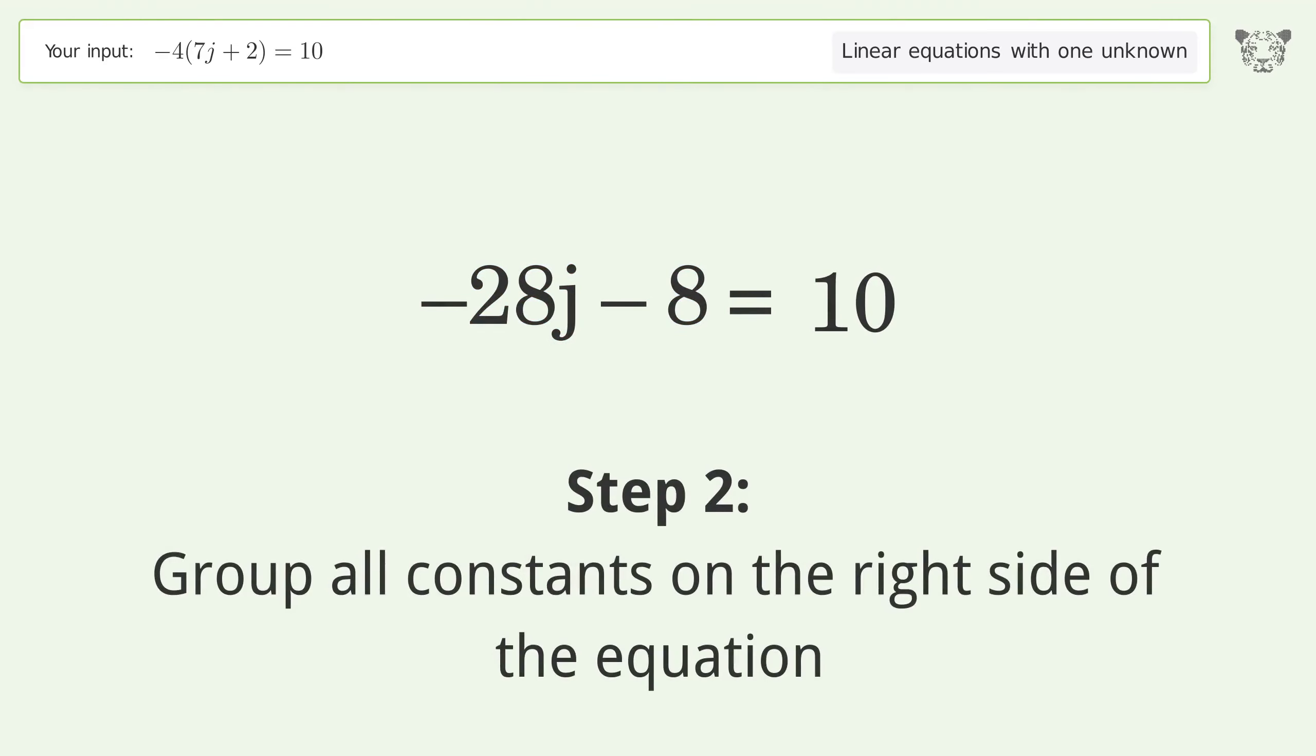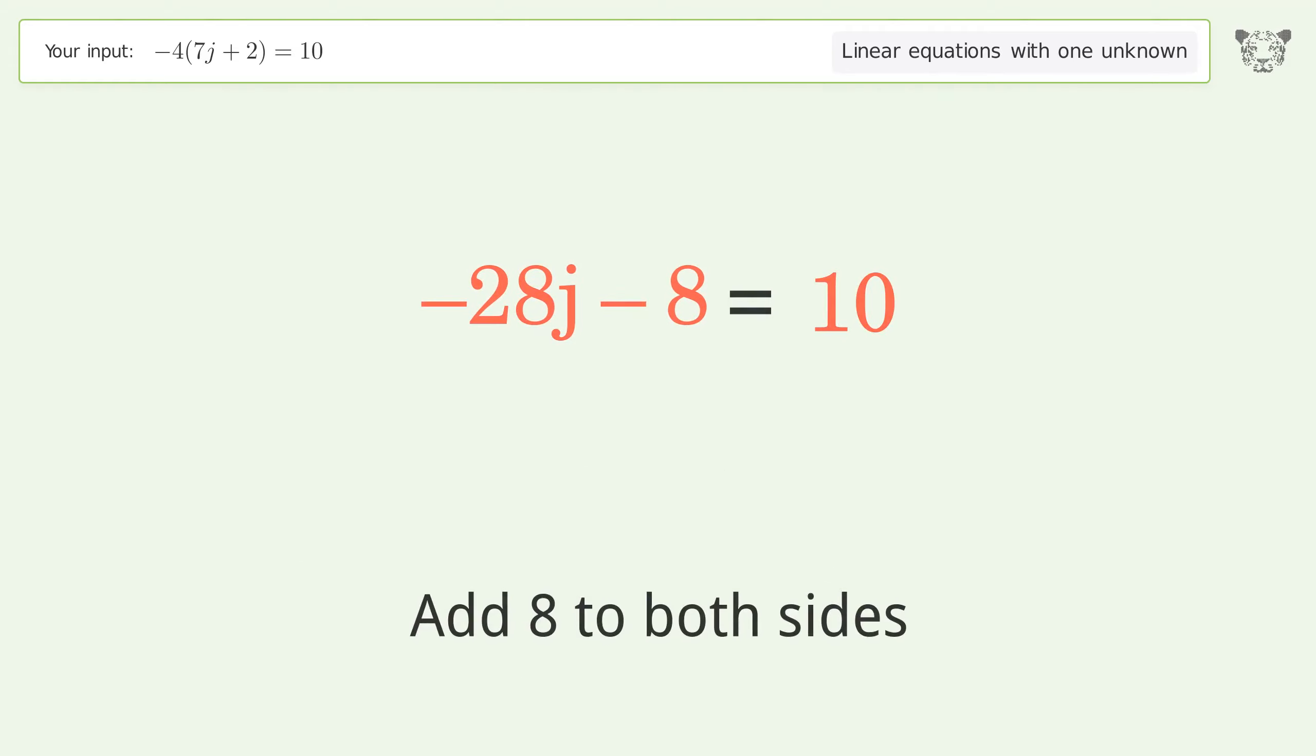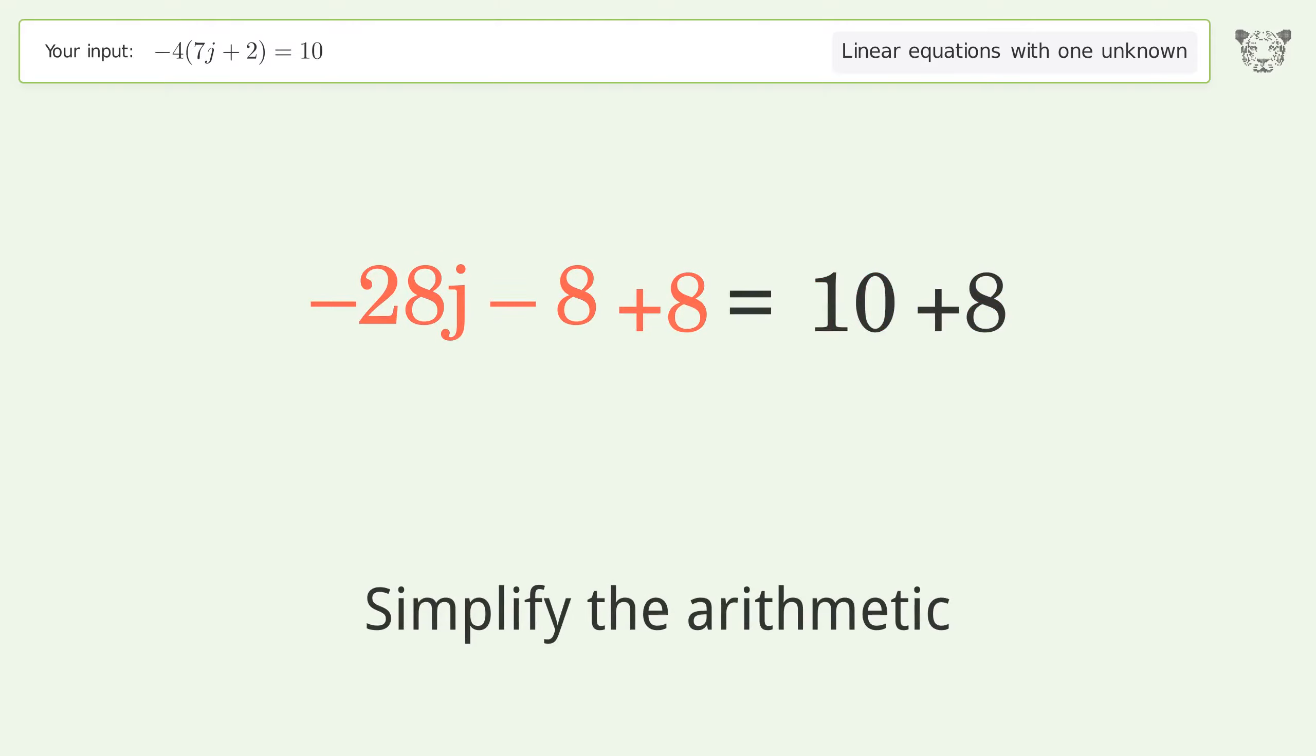Group all constants on the right side of the equation. Add 8 to both sides and simplify the arithmetic.